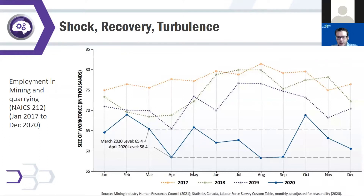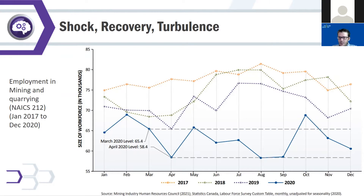Looking at the unemployment level in mining quarrying, the initial shock in April takes us from 65,000 workers to about 55,000 workers. Compared to the three previous years, the recovery has been somewhat sluggish and prolonged — this is what we're calling turbulence. We're continuing to monitor this period closely as we've entered new lockdowns and vaccine deployment, keeping an eye on how these new events continue to evolve the pandemic.